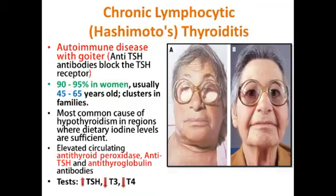يعني طبعاً هي young age - أقل من 45 سنة، من صار عندها signs and symptoms of hypothyroidism ومن أخذنا الـ biopsy عرفنا إنه Hashimoto's thyroiditis. Hashimoto's thyroiditis هو الـ most common cause للـ hypothyroidism in regions where dietary iodine levels are sufficient، وهذا يعزز إنه مو سبب نقص الـ iodine وإنما هو عبارة عن autoimmune response. يصير نتيجة إنه الـ patient يخسر immune system recognition of self-antigen from non-self-antigen. عندي circulating certain antibodies بالـ blood - هما الـ antithyroid peroxidase antibody والـ anti-TSH والـ anti-thyroglobulin antibodies.